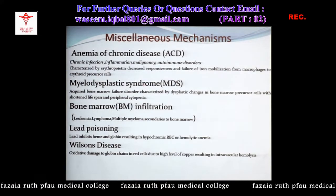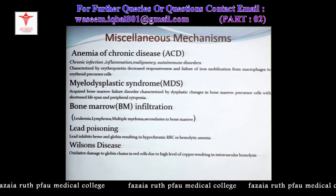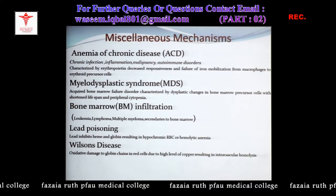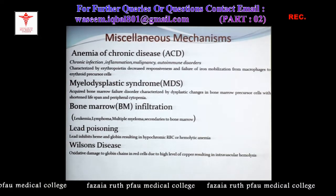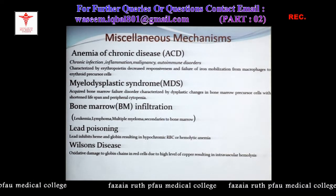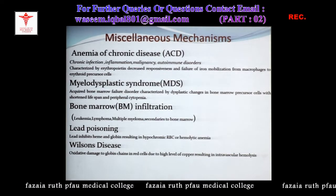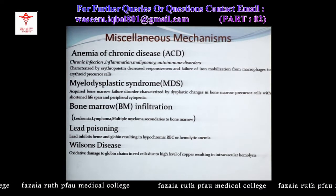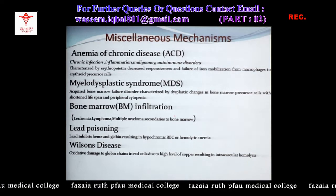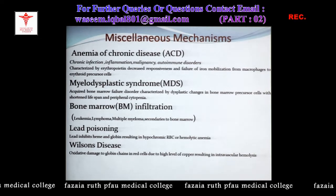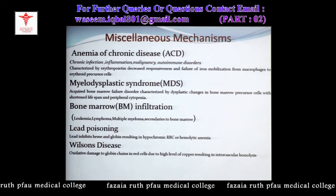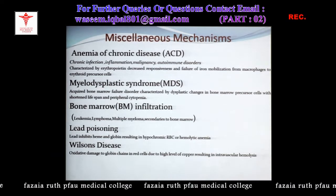Myelodysplastic syndrome is an acquired bone marrow disorder with dysplastic changes in developing bone marrow cells — they are abnormal and destroyed earlier within the bone marrow, causing anemia. Bone marrow infiltration is a large group including leukemia cells, lymphoma cells, multiple myeloma cells, or secondary malignancies spread from primary sites such as prostate, lung, or breast carcinoma.